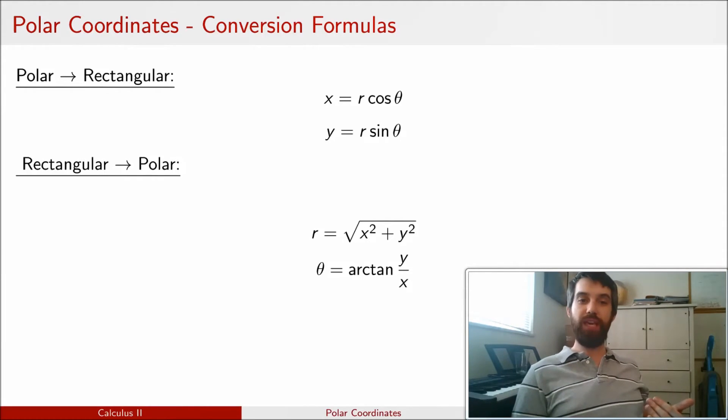And then, I can also take a quotient. I can take Y divided by X, and that's going to give me tangent theta. And so, rearranging, theta is equal to arctangent of Y over X.